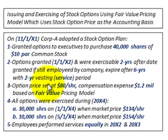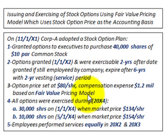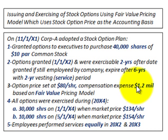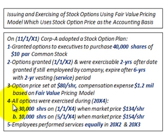The option price is set at $80 per share, and compensation expense is estimated at $1.2 million based on the fair value pricing model. The company expects these options are going to cost them $1.2 million when these executives exercise them. The options would expire after six years, and all options were exercised during 20X4.